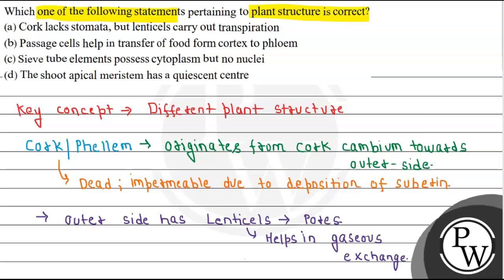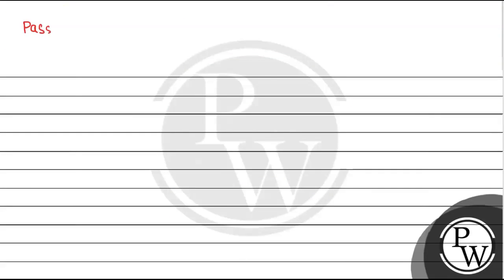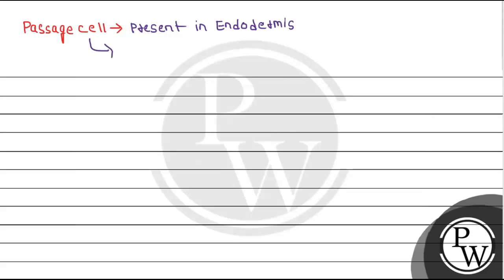Now we will talk about the passage cell. The passage cell is present in the endodermis. As cork was suberized, the passage cell is unsuberized — it is thin-walled and unsuberized.